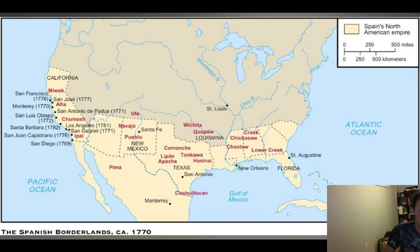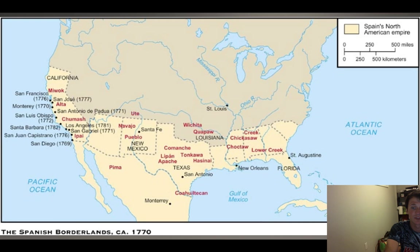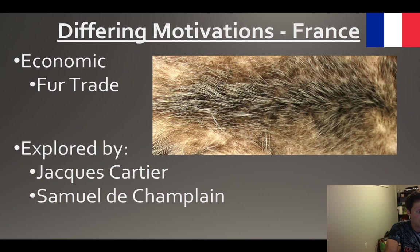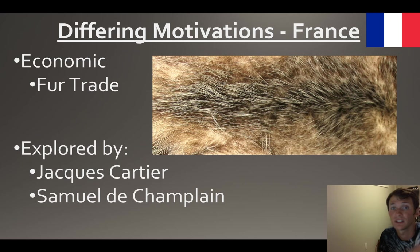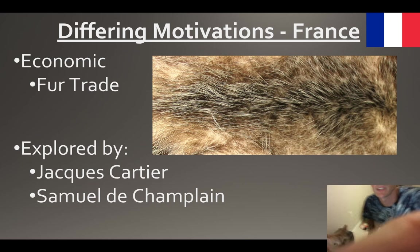We talked about the Spanish borderlands - the Spanish are going to push all the way up into California, New Mexico, and Texas. You're going to start to get this mestizo culture spreading. Let's move to France.